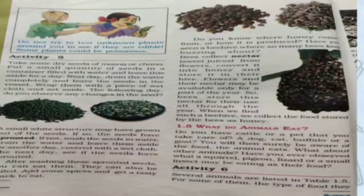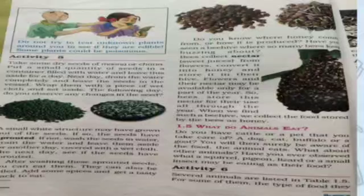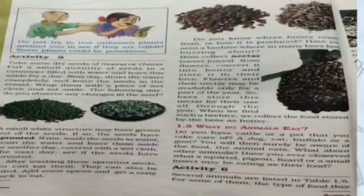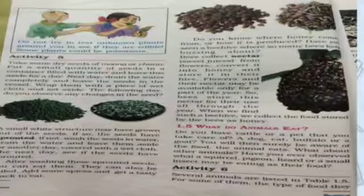Herbivorous animals eat only plants or plant products — examples are cow, buffalo, and deer. Carnivorous animals eat other animals — examples are lion, tiger, and wolf. Omnivorous animals eat both plants and animals — examples are human beings and bears.